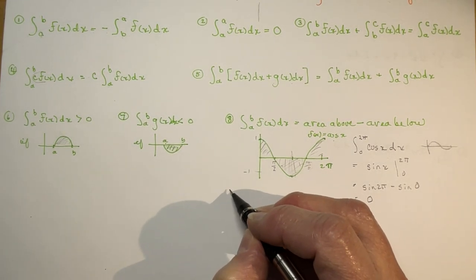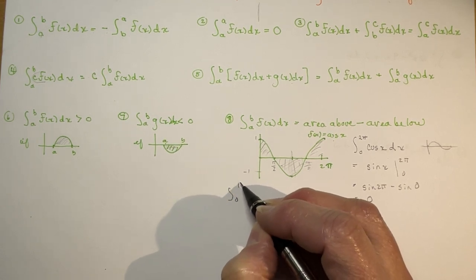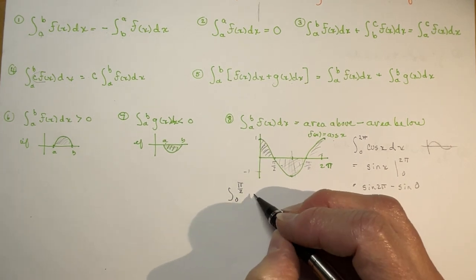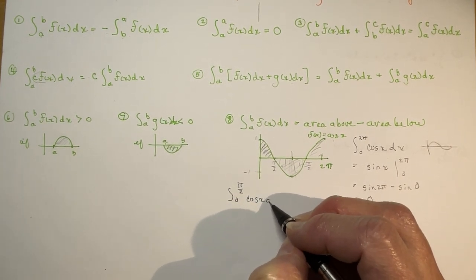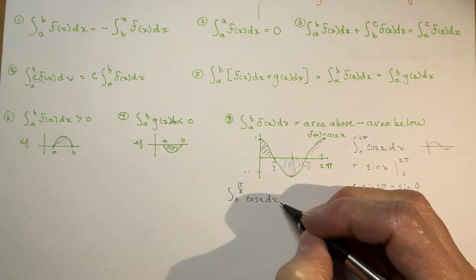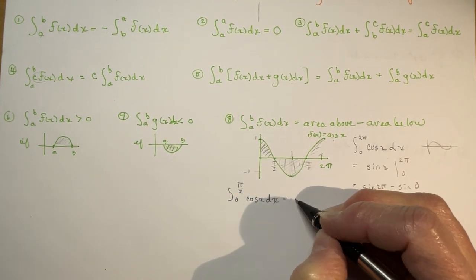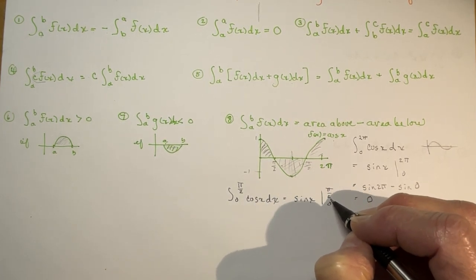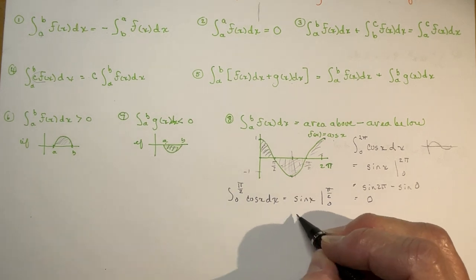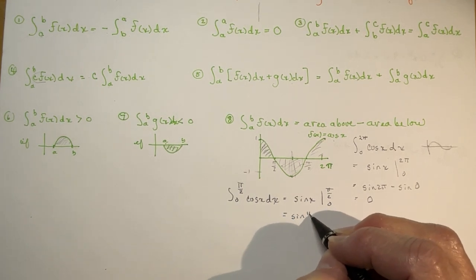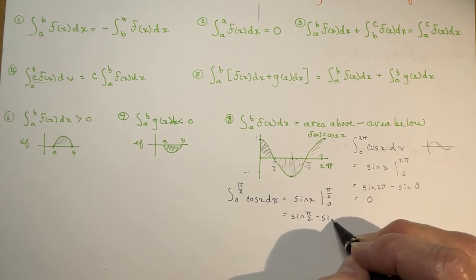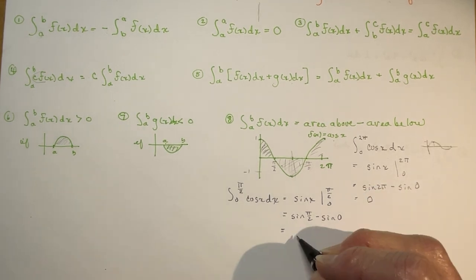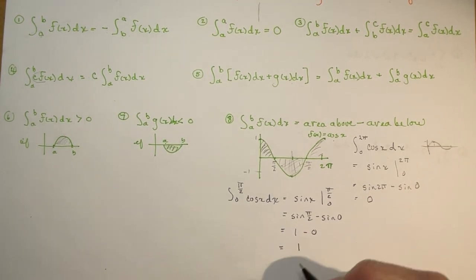You can try those if you want — let's just do one of them. What if I did the integral between 0 and π/2 of cos(x) dx? That's going to equal sin(x) between 0 and π/2, which gives sin(π/2) minus sin(0). The sine of π/2 is 1, so I have 1 minus 0, and I get 1.